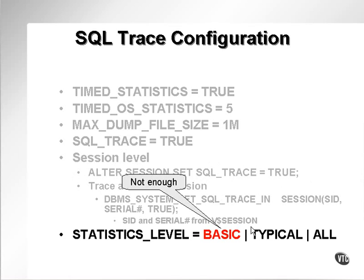Statistics level is the level or amount of statistics collection. Basic is generally not enough, and if you want to keep SQL trace set to true, set to basic when running in production mode.